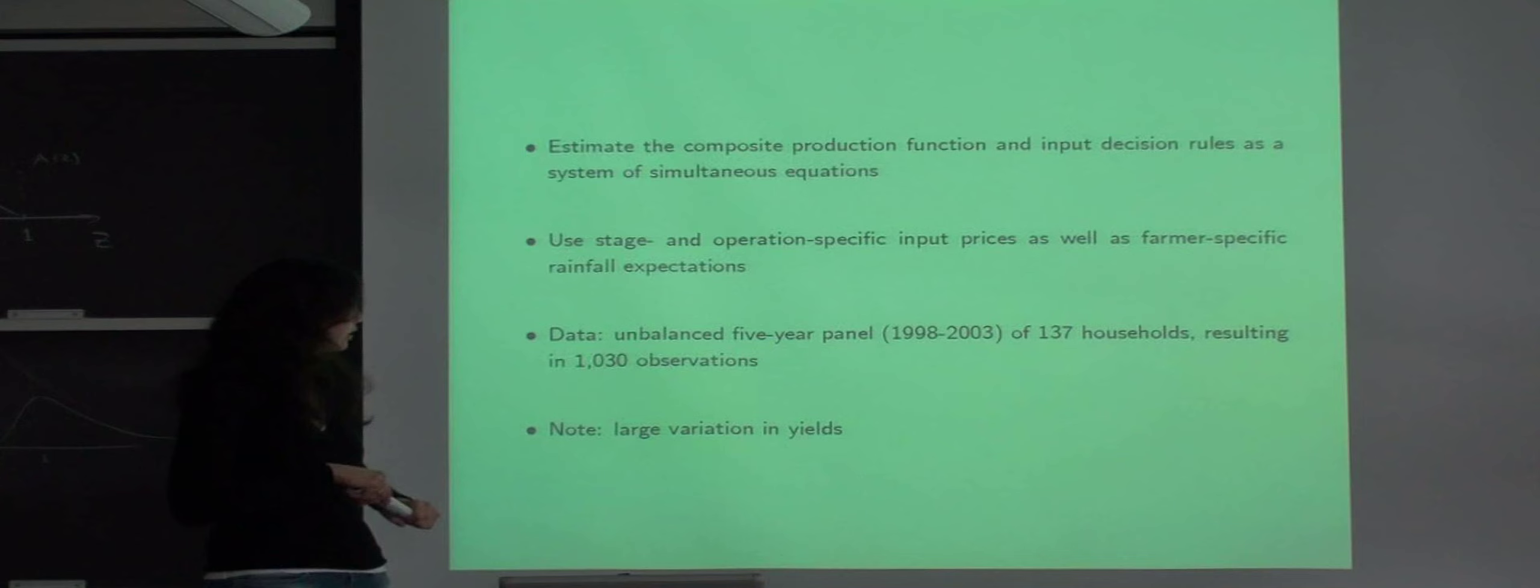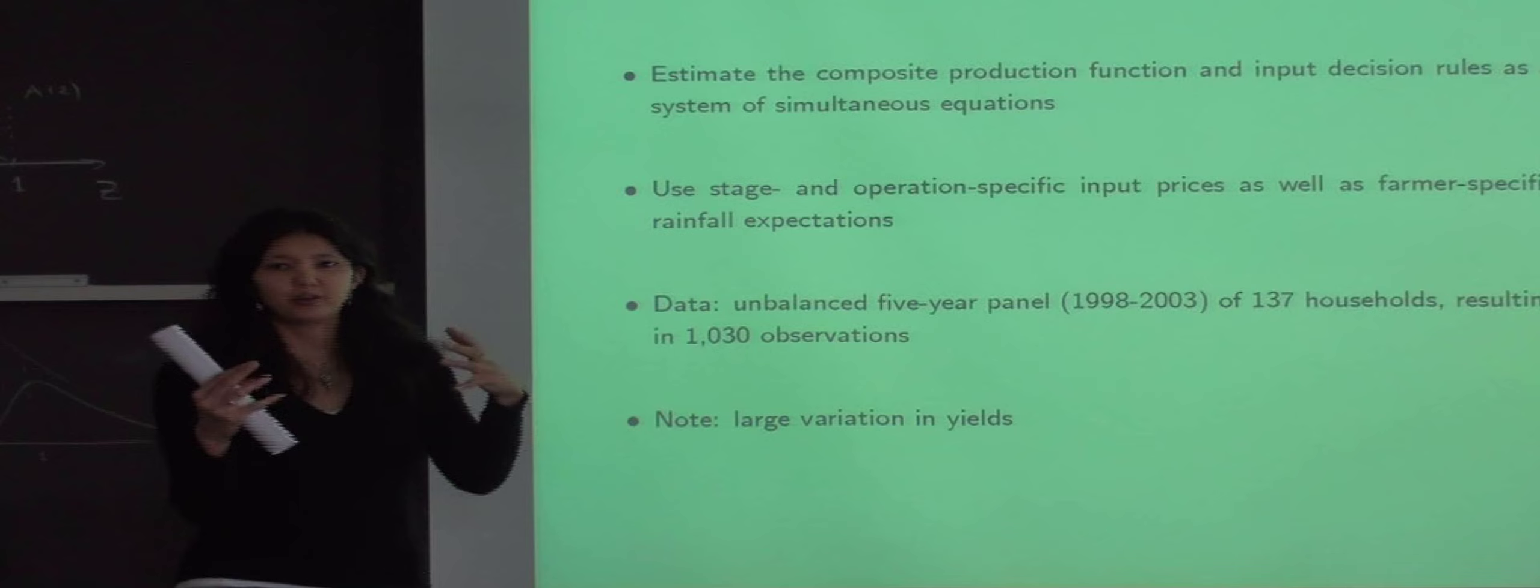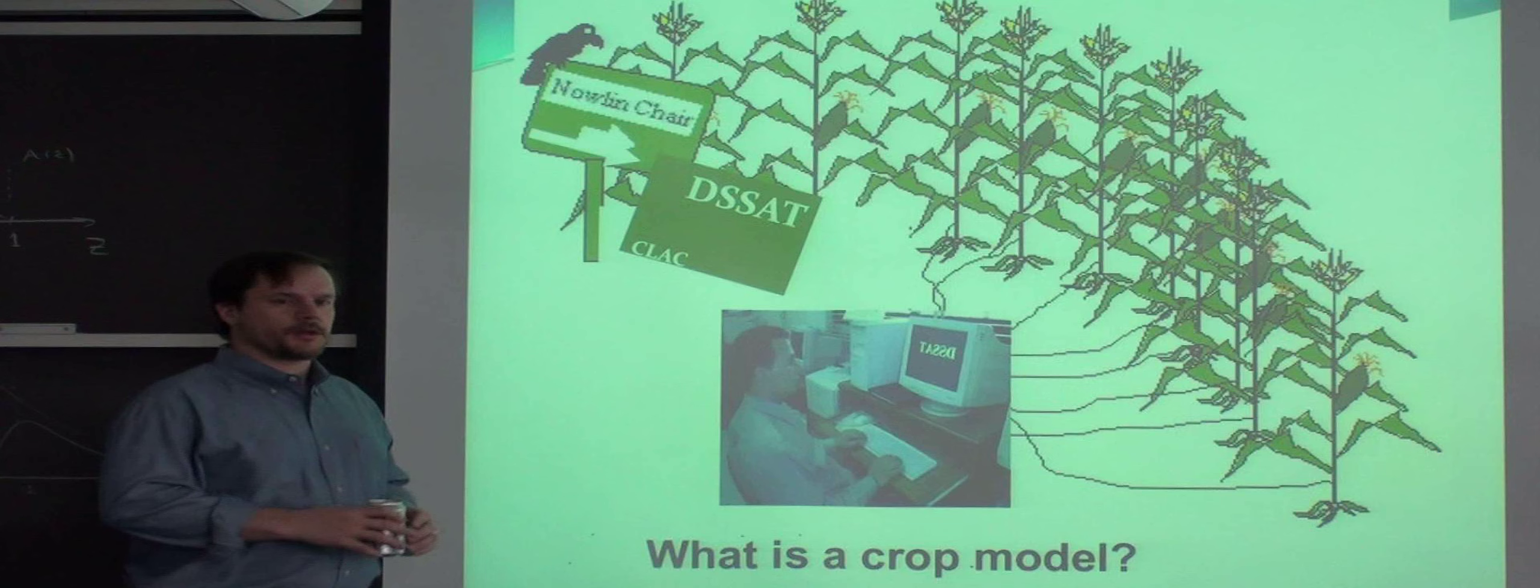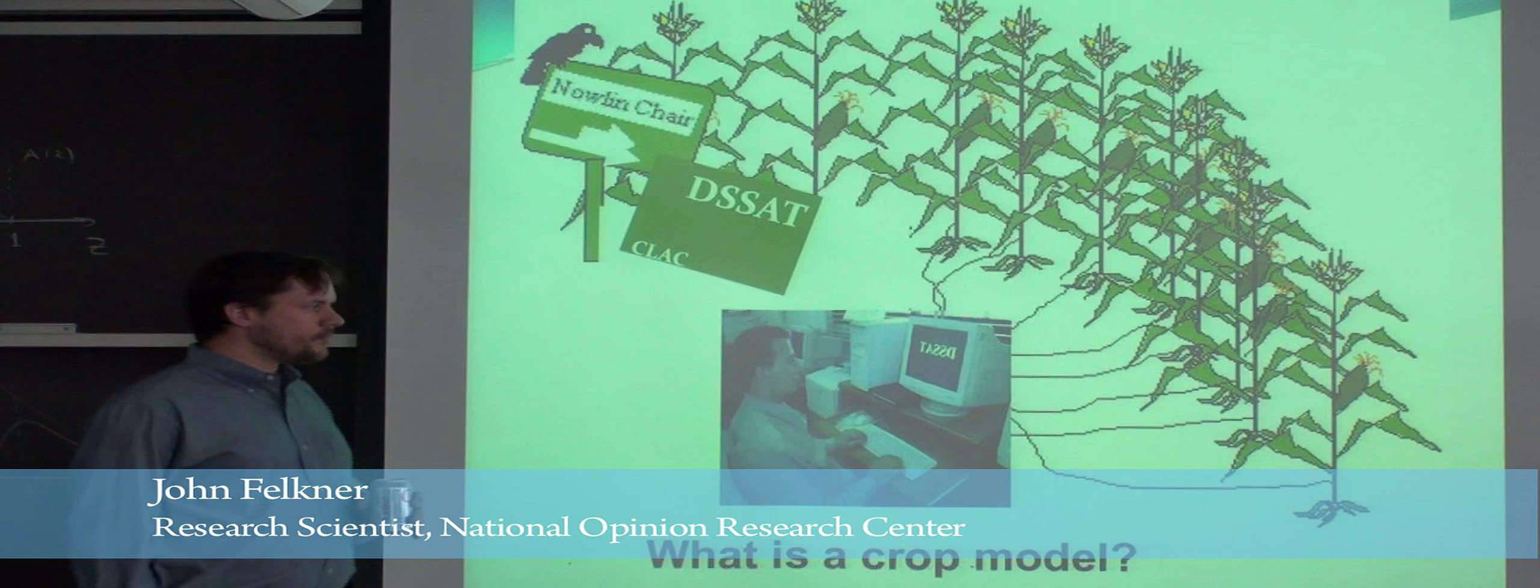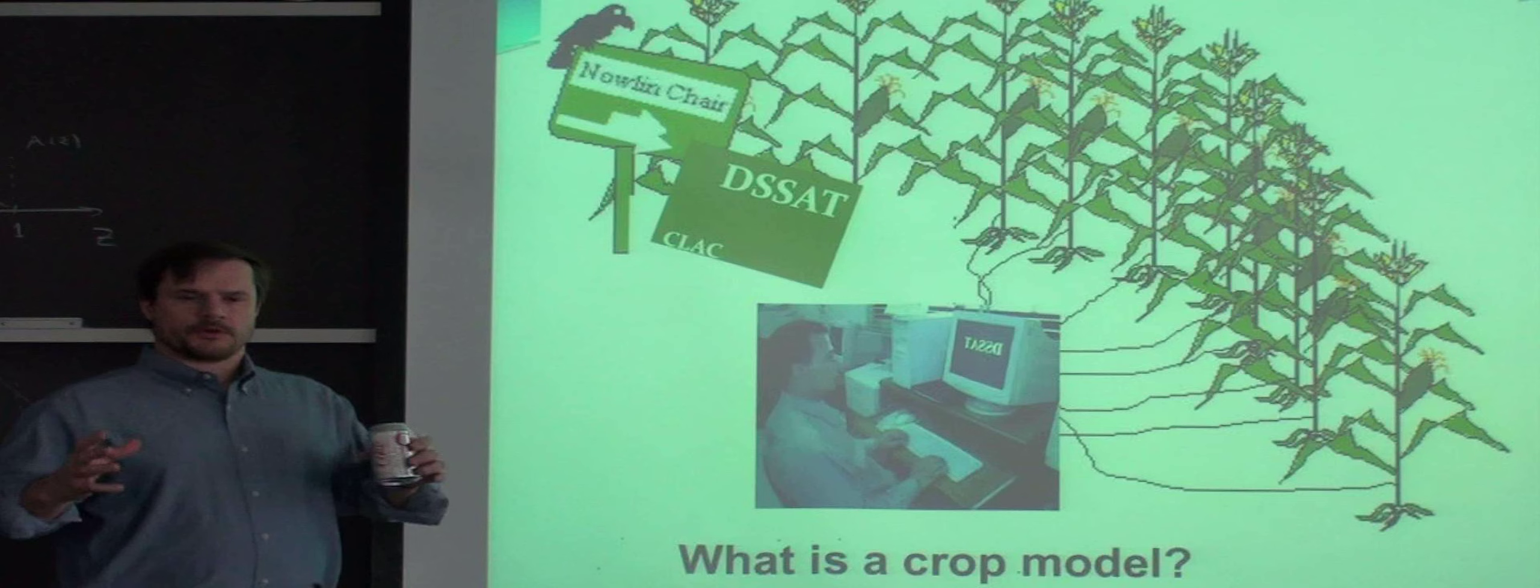We use unbalanced five-year panel for 137 households. To do the estimation we need some measure of intermediate output. We also use something called a crop model to estimate crop yields, and we also use a stochastic weather generator. We condition those on predicted climate changes from some global climate models and some different economic scenarios.